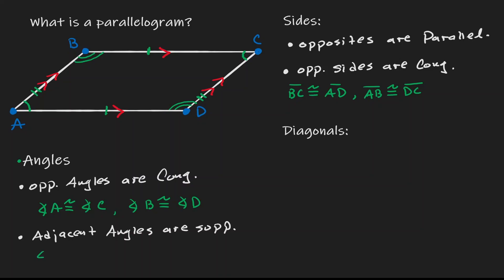So let's write that down. If I get angle A and then I add angle D, that is going to be equivalent to 180 degrees. Angle A is also adjacent to angle B, because they both are on the line segment AB. So if I get angle A and I add angle B, that will also give me 180 degrees. As long as angles are on the same line segment — as long as they are adjacent — then we can claim that they're supplementary.